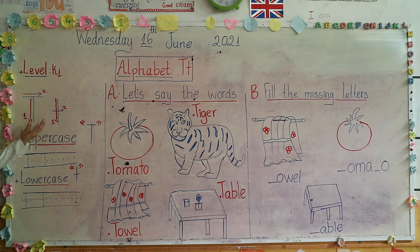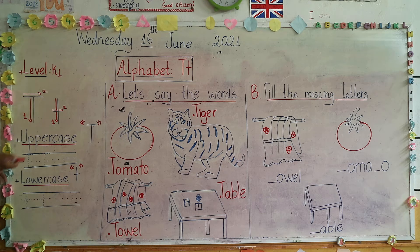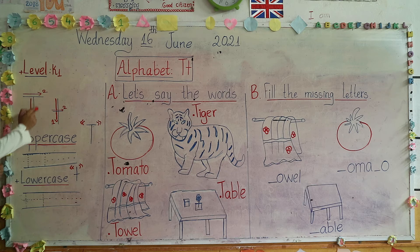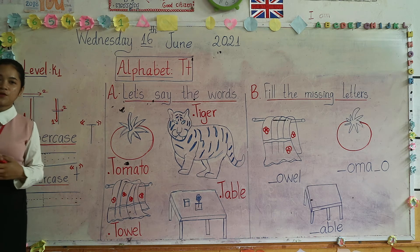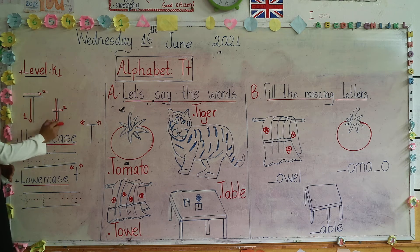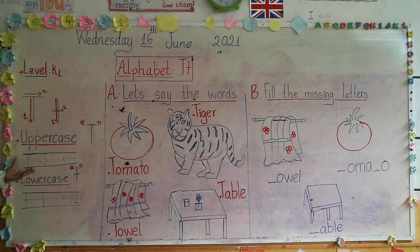Okay, now let's class look at the board. This is letter T — uppercase T, lowercase T. Now let's write it. Uppercase T has two steps. The first step is down, and the second step is straight. Or you can say one and two. Okay, uppercase T.